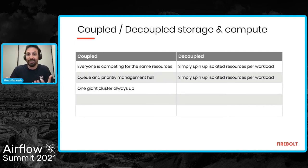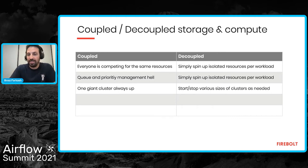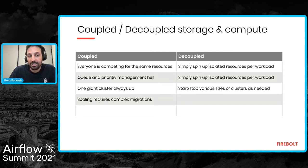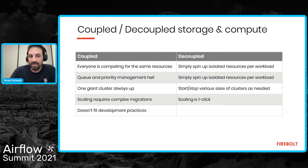In the coupled world, you size your cluster based on your most demanding requirements, and that giant cluster stays up and you keep paying for it even when it's not heavily loaded. In the new decoupled world, you can start, stop, and resize different clusters on demand — and only pay when you use them. When nothing's running, you can pay nothing. Scaling is also much more complex in the old world: as data grows and starts to choke you, you manage a complex migration to a bigger cluster, whereas in the new world it's just one click.